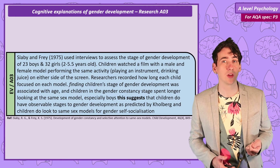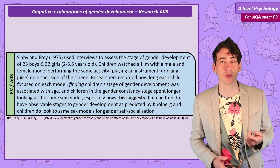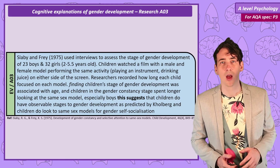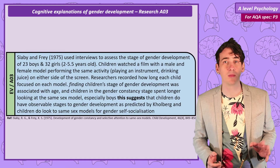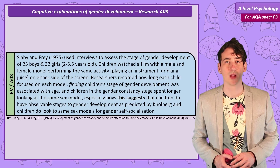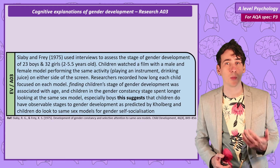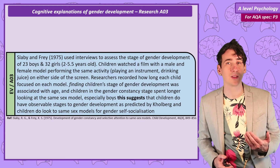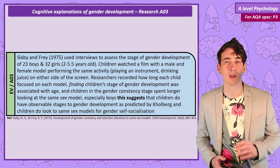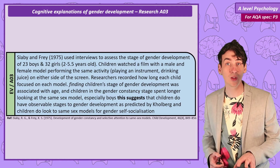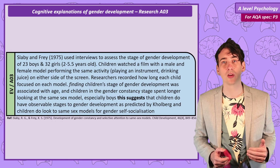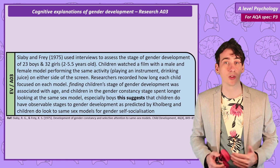After the interviews, the researchers got the children to watch a film on a movie screen. On the screen there was a male and female model on opposite sides of the screen. They carried out the same activities, but the children were placed so close to the screen they could only focus on one model at a time. A researcher hidden behind a one-way mirror then recorded how long each child looked at each model.